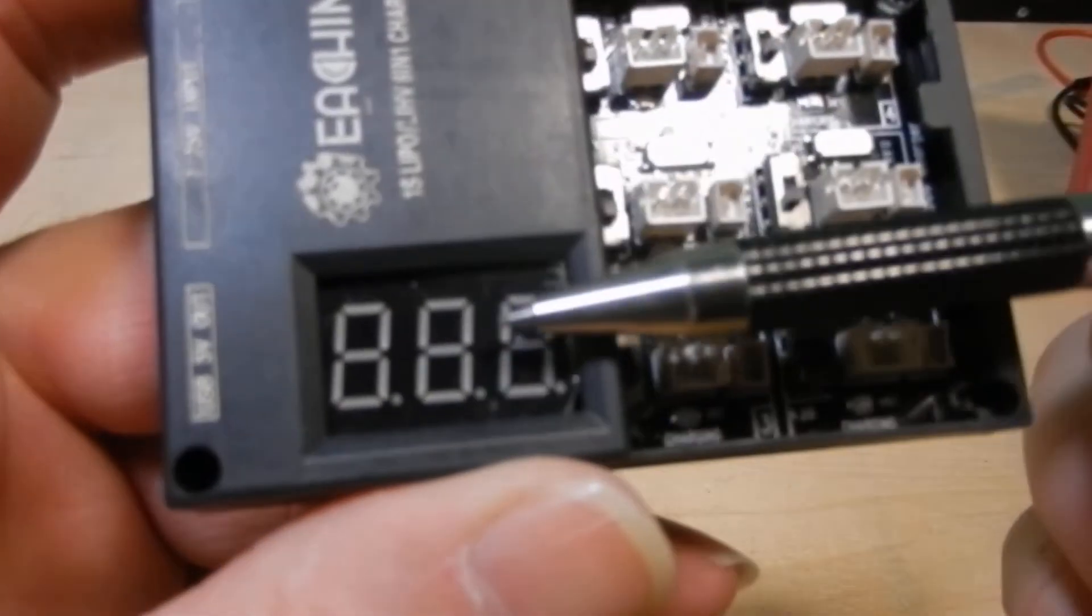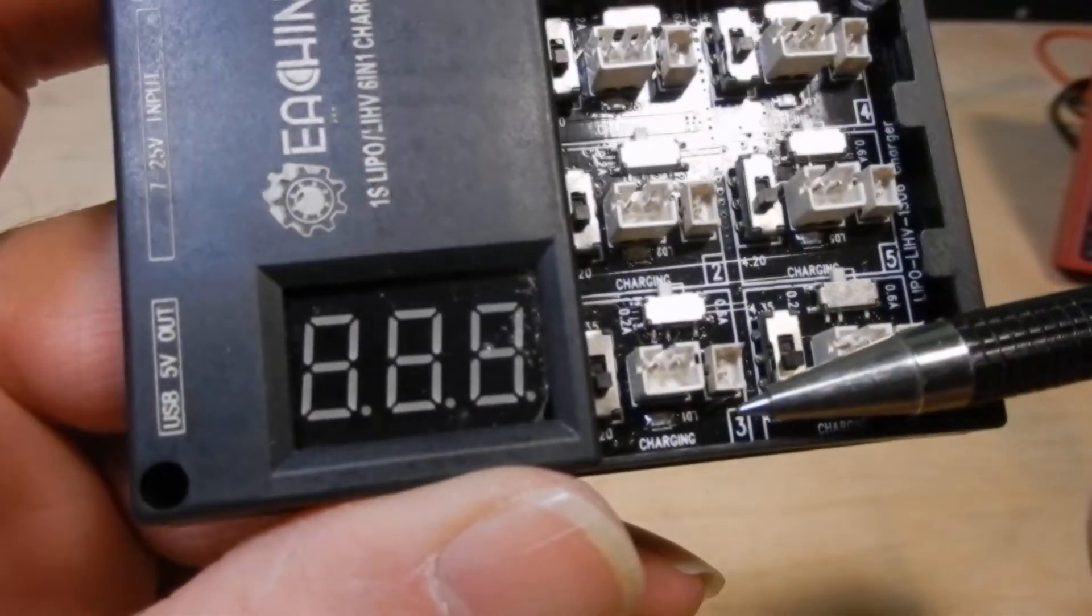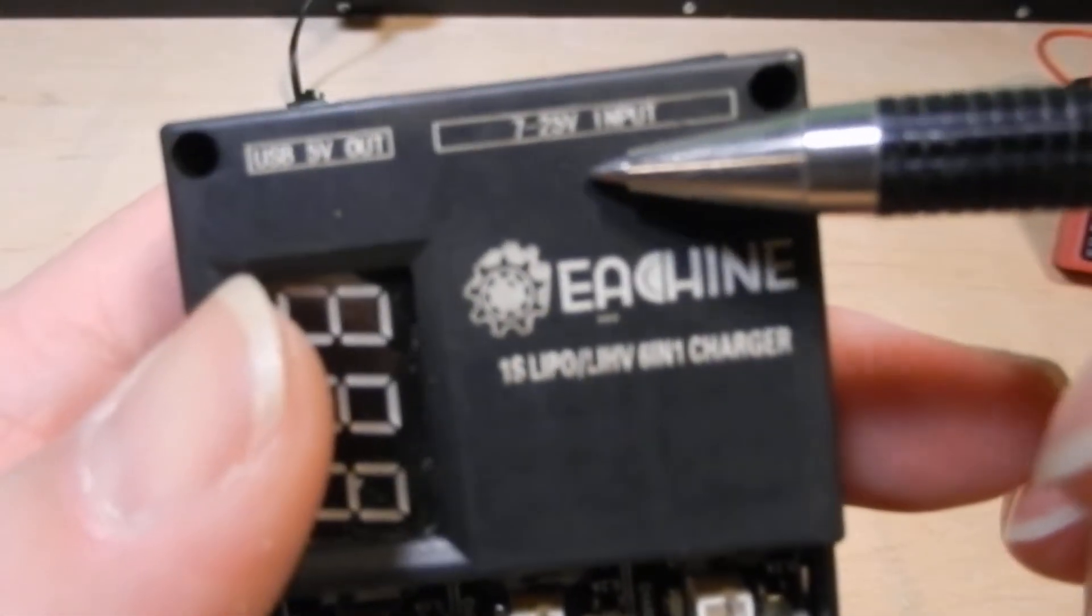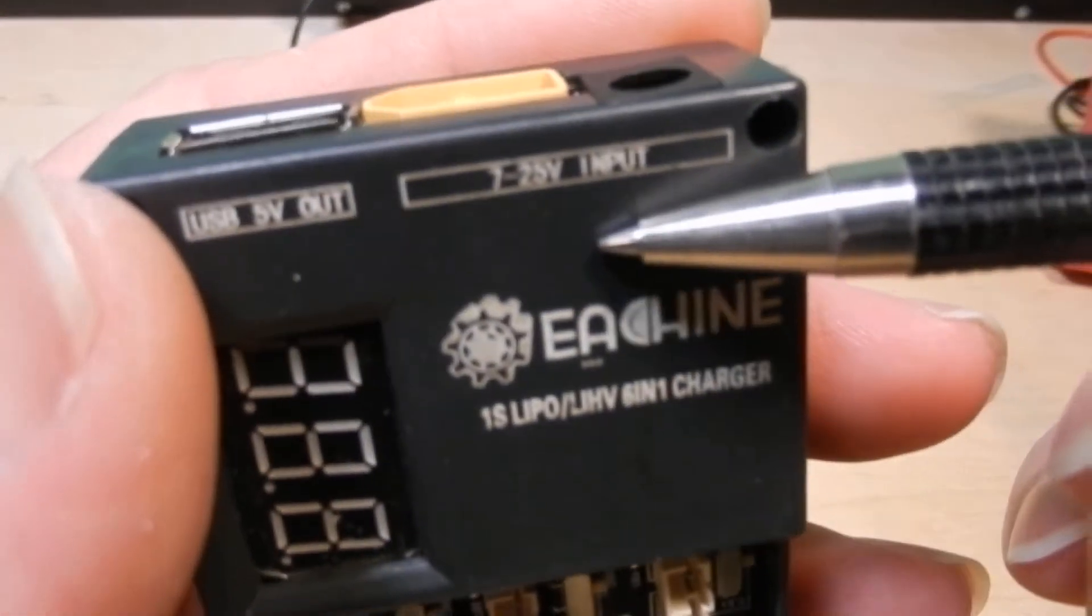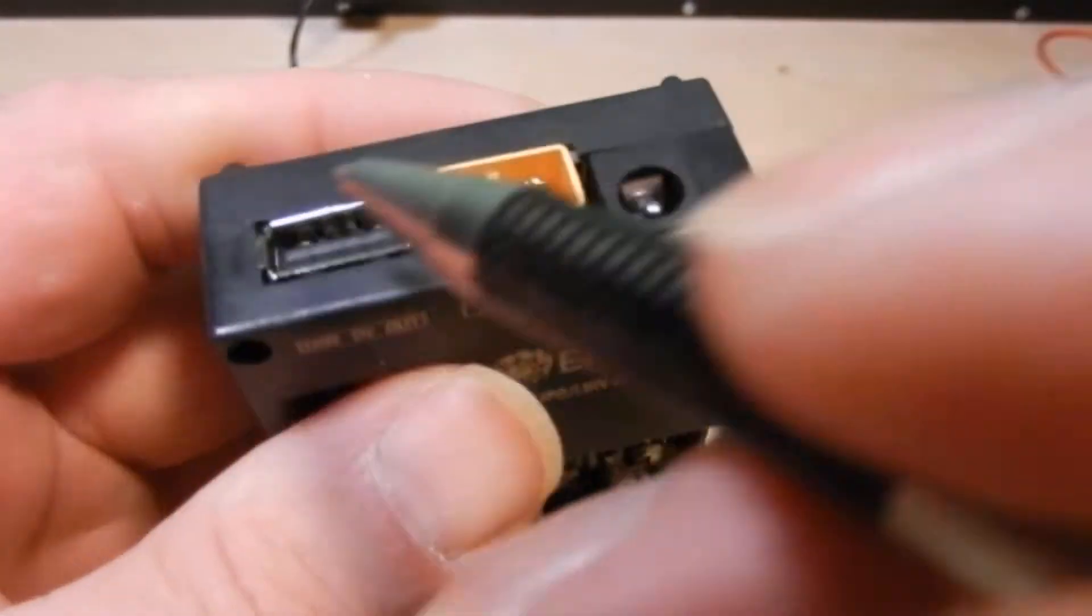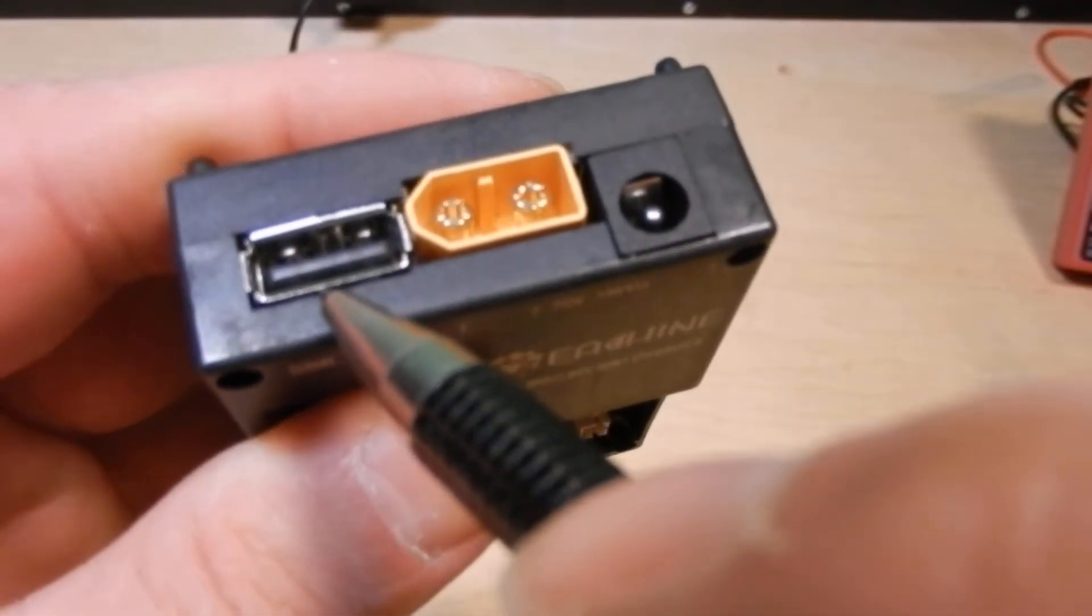You also have a readout here which will cycle through all your voltages. It says it takes between a 7 to 25 volt input. And over here you have a USB 5 volt out. This USB is for charging your cell phone or whatever.